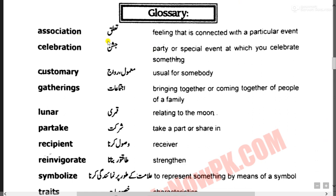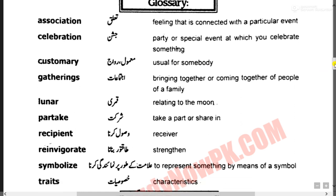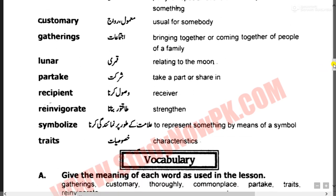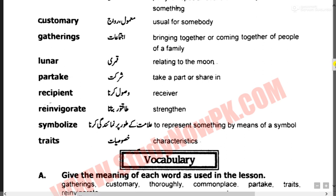Association کا مطلب ہوتا ہے تعلق۔ Celebration, customary کا مطلب ہے معمول یا رواج۔ Gathering کا مطلب ہوتا ہے اجتماع، مجموعہ، اکٹھا ہونا۔ Lunar calendar کو کہتے ہیں قمری سال - چاند کے حساب سے جو چلتا ہے۔ Party کا مطلب ہے شرکت کرنا۔ Reinvigorate کا مطلب ہے طاقتور بنانا، مضبوط بنانا۔ Symbolize کا مطلب ہے نشاندہی، traits کا مطلب ہے خصوصیات۔